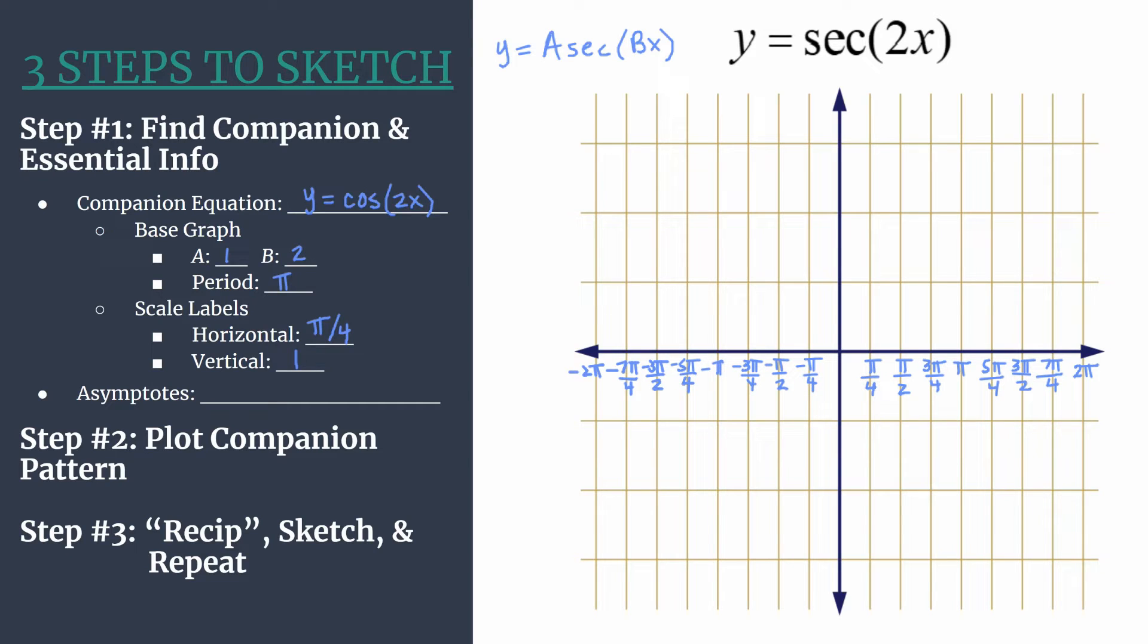So we have the full horizontal axis labeled, and now we can label our vertical axis. Counting by 1 is easy enough. There we have it.